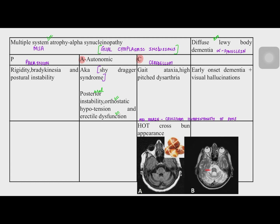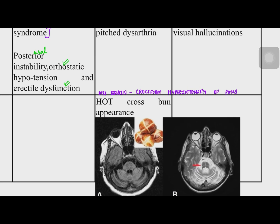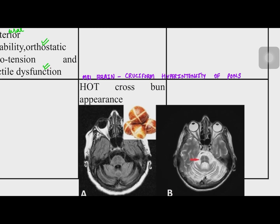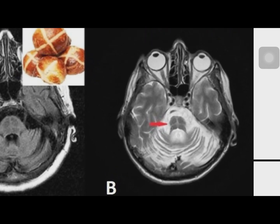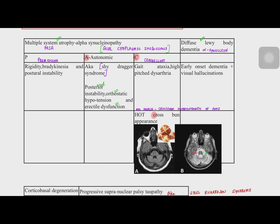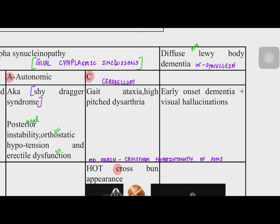MSA type C stands for cerebellum. It presents as gait apraxia, ataxia, and highly-pitched dysarthria. A very characteristic finding is seen on brain MRI: the hot cross bun appearance, seen in MSA type C — C for cross. This hot cross bun appearance is a cruciform hyperintensity of the pons visible on MRI.